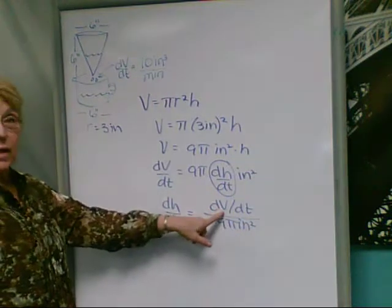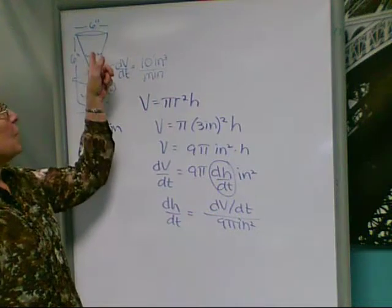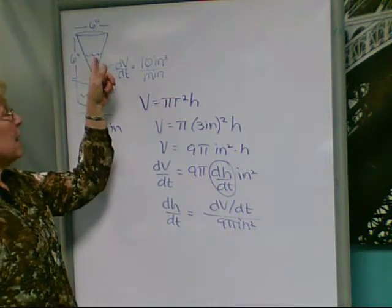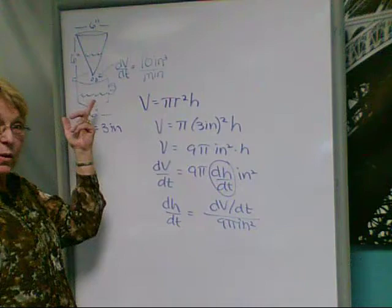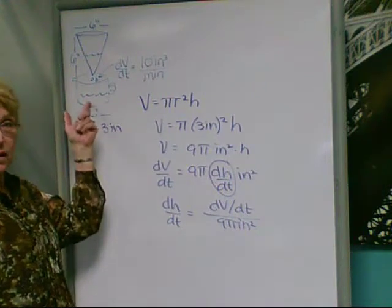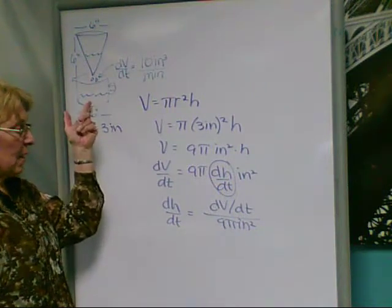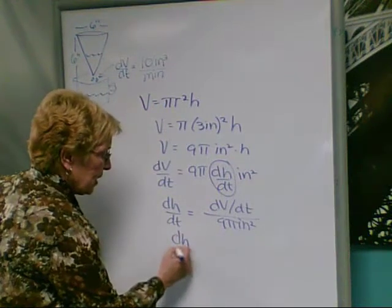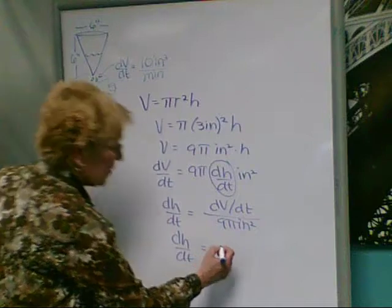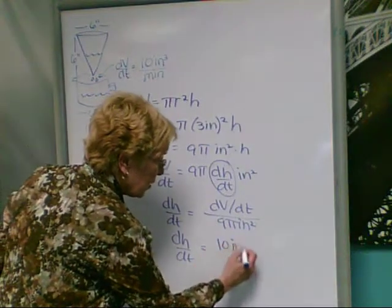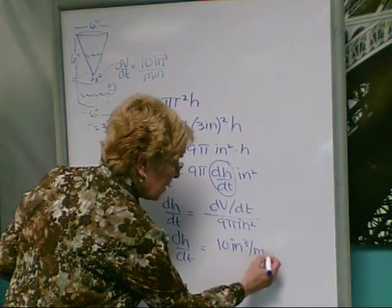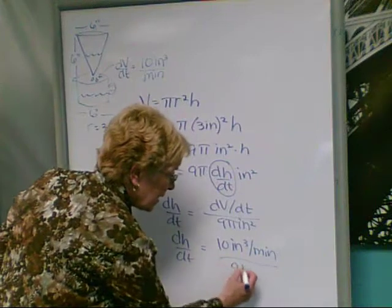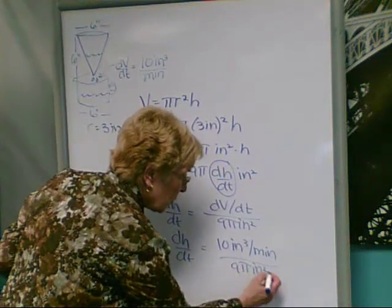Now this quantity was given to us for the coffee filter. That was its empty rate, but notice that that's also the fill rate of the coffee carafe. So here, we're going to have dh dt equals a fill rate of 10 inches cubed per minute divided by 9 pi inches squared.